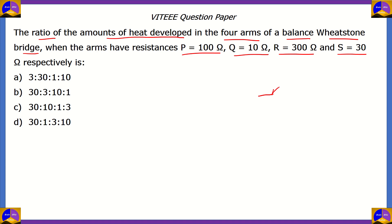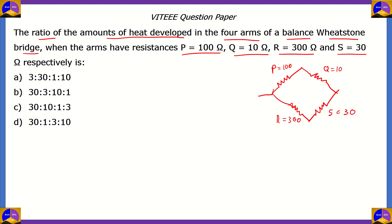In a balanced Wheatstone bridge, we have four arms: P, Q, R, and S. P is 100 ohms, Q is 10 ohms, R is 300 ohms, and S is 30 ohms. Since P and Q are connected in series, we add their resistances: arm PQ gives us 110 ohms of resistance. Similarly, arm RS is 300 plus 30, equal to 330 ohms.